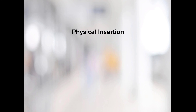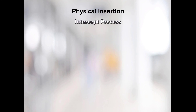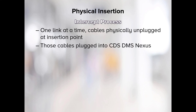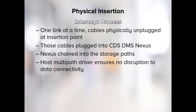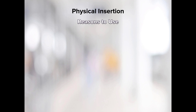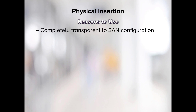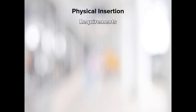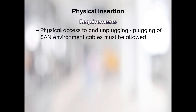Physical insertion: For the physical insertion intercept process, using one link at a time, cables are physically unplugged at the point to be inserted, and those cables are then plugged into the CDS appliance nexus. The CDS nexus are chained into the storage paths, and the multipath driver in the host ensures there is no disruption in data connectivity. Reasons to use: This insertion method is totally transparent to the SAN configuration. It requires no changes at all to the SAN environment — no LUN masking changes, no switch zoning changes, and no multipath configuration changes. Its only requirement is that end users must allow physical unplugging and plugging in of cables in the SAN environment.